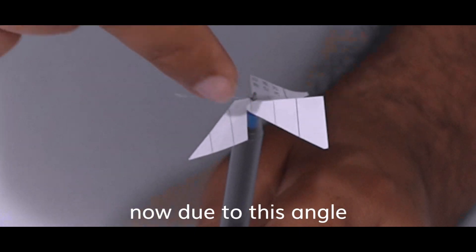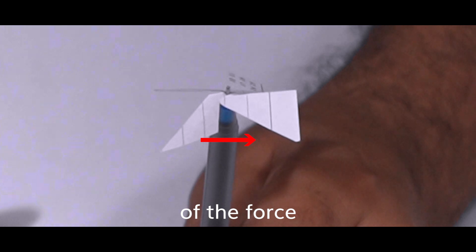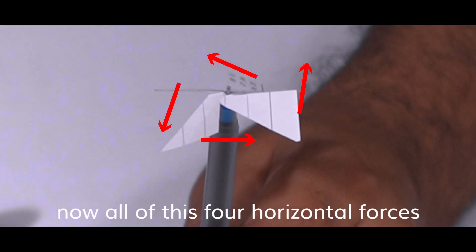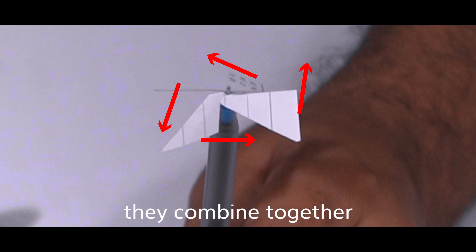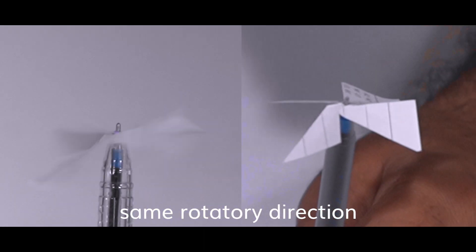Now due to this angle, there is always a horizontal component of the force on all the four blades as shown. Now all of these four horizontal forces, they combine together because they are all in the same rotatory direction, and that is why it rotates.